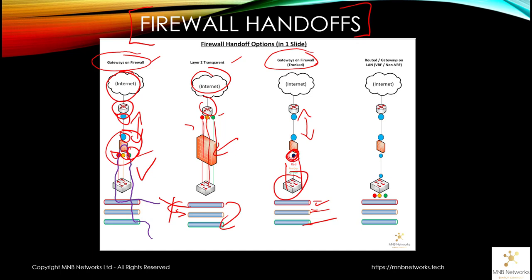The final design is routed or gateways on the LAN with VRFs or without VRFs. We have the same technique where we have a routed link between the CE or upstream router from the firewall. You see we have the blue interfaces to signify that this is a routed environment.